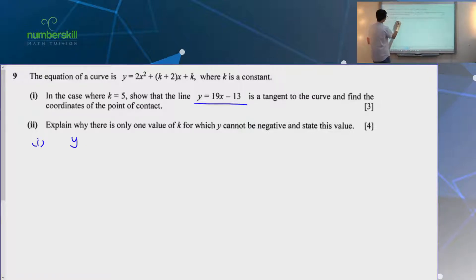So k is equal to 5. Show that this line is a tangent. How do you show it's a tangent? It must intersect at one point. So when you are trying to solve for the intersection point, this is what you get.